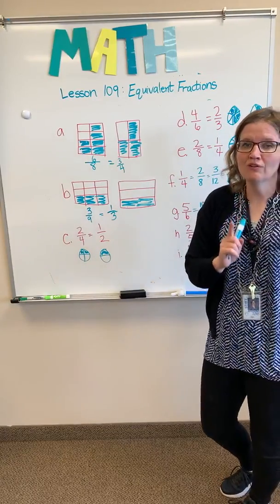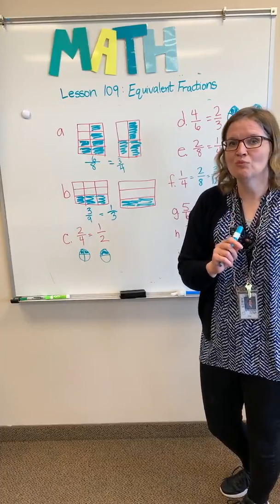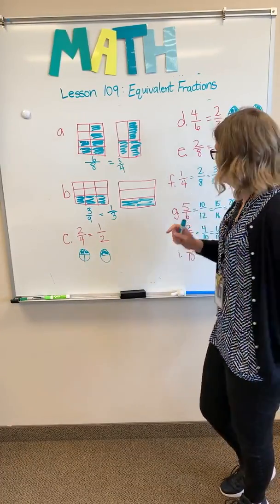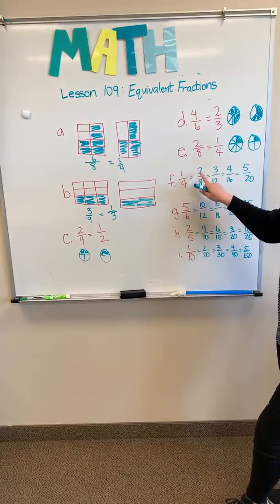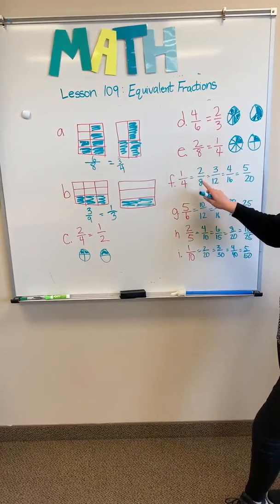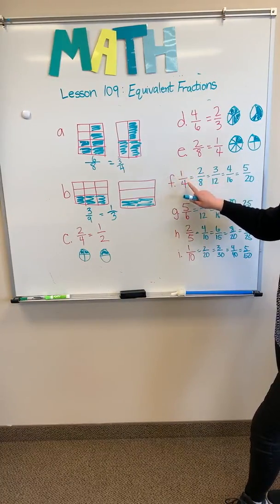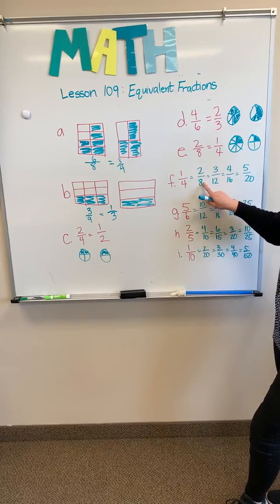We're going to take 1 fourth and multiply it by 1. Only in this situation, we're multiplying it by 2 over 2. So 1 fourth multiplied by 2 over 2 is 2 eighths.